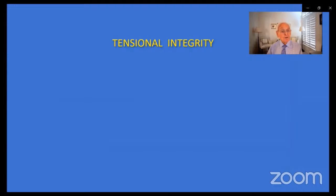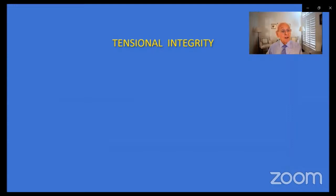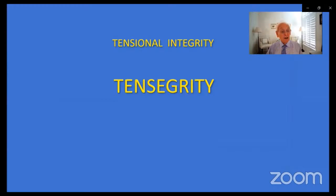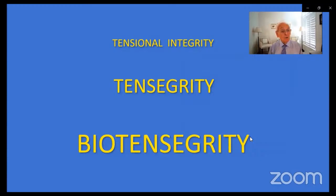Where did this word come from? Tensional integrity — or tensegrity — is a portmanteau word made up of tensional integrity. Buckminster Fuller coined it and used it widely in architecture. About 40 years ago, somebody in the biological world looked at tensegrity and said it can apply to living materials — not just building materials. He called it biotensegrity. So from an architectural concept, we move to a very live concept: living organisms function using biotensegrity as a means of doing so.